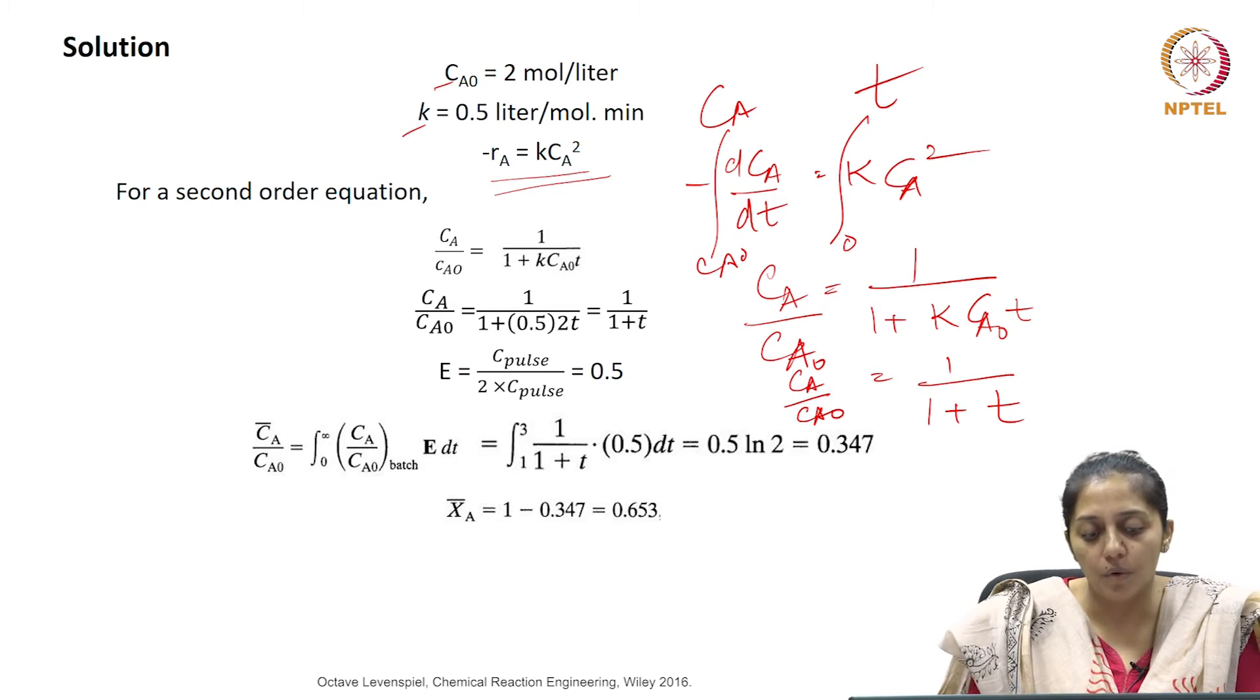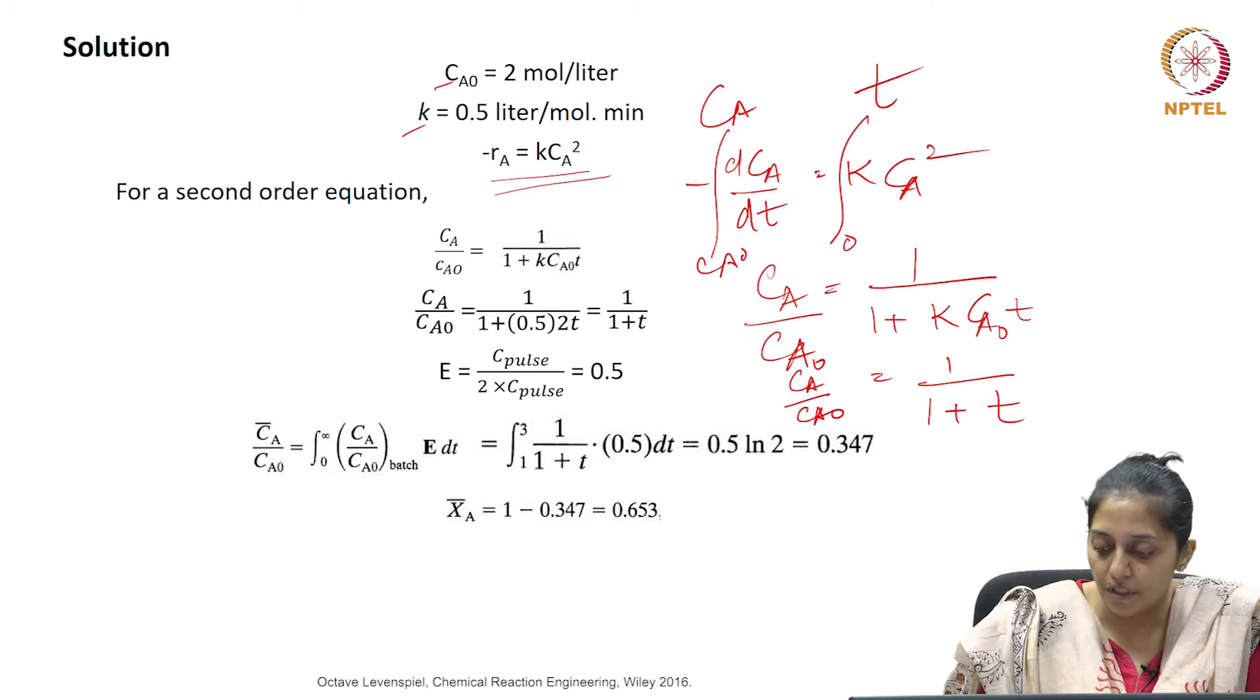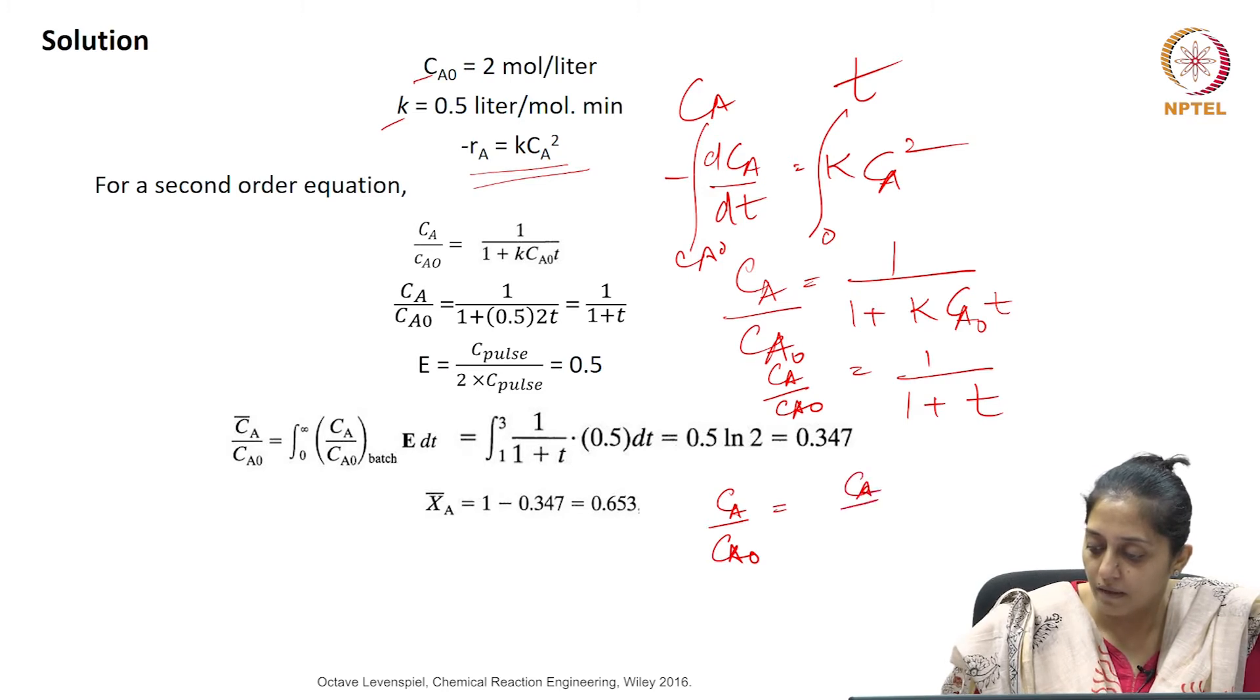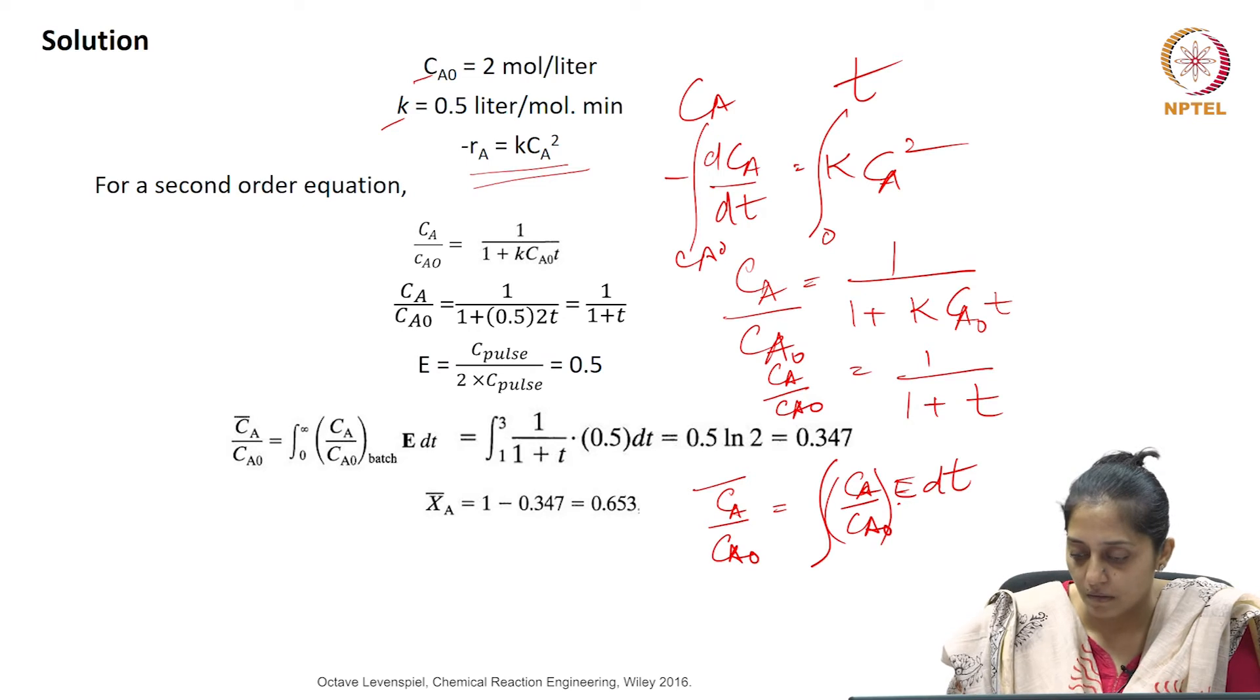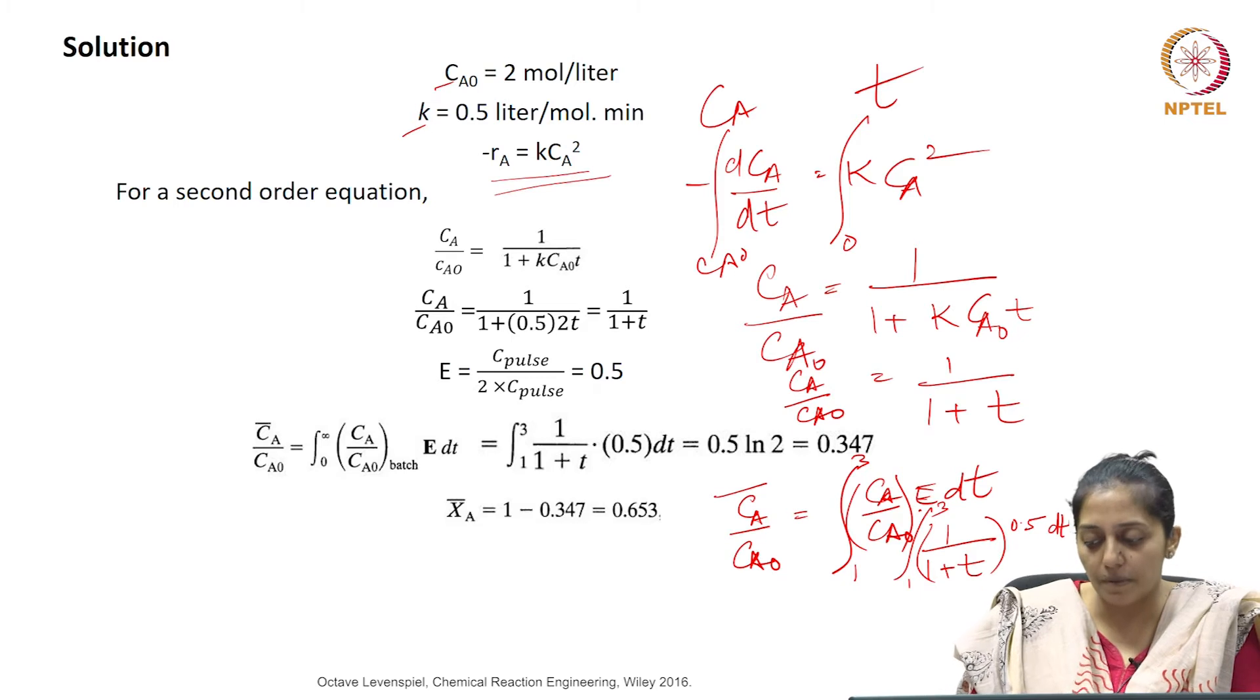E curve we know is C pulse divided by the area under the curve. By convolution integrals, if you remember, this fraction will be integrated. We know that Ca by Ca naught between 1 to 3 can be given by the function 1 by 1 plus t. The E value in this time is 0.5, and the integral limits will be between 1 and 3.